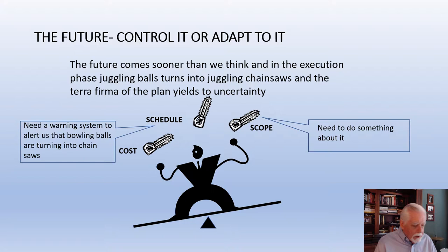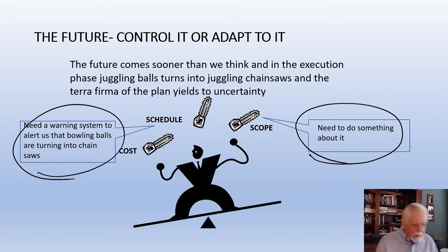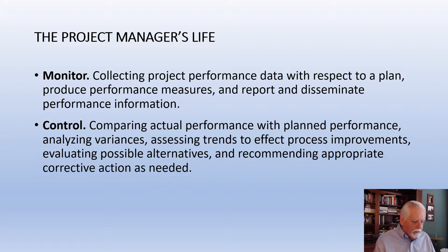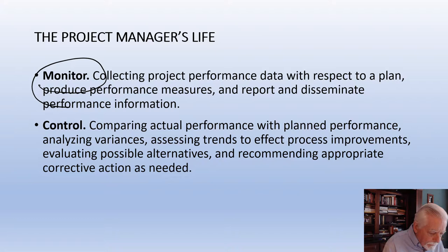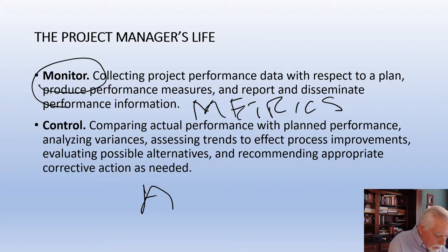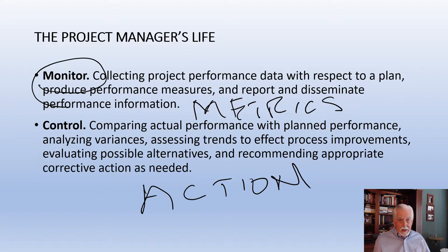We want to control the future or adapt to it. We need a warning system to tell us we're in trouble and that we need to do something about it. That's where metrics come in. In the execution phase, the project manager's life is monitoring and collecting product performance data, understanding what these measures mean — that's the idea of metrics — and then controlling it, showing yourself as a leader and taking action to confront the future unfolding before you.